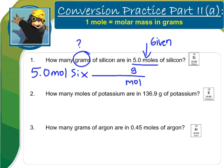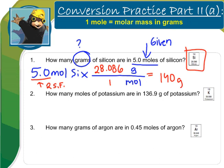Using my periodic table, I find that the molar mass of silicon is 28.086 grams, and as usual this is equal to 1 mole. I put this in my calculator, rounding to two significant figures, and I get 140 grams of silicon.